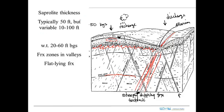Some typical dimensions: the saprolite is typically about 50 feet thick, but it can be variable — up to 100 feet thick is fairly common. The water table is about 20 to 60 feet down. At the lower well field it was about 25 feet down; at the upper well field, more like 45 feet. Fracture zones in the valleys, with a combination of vertical and flat-lying fractures in the rock, give us a connected flow system.